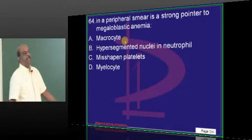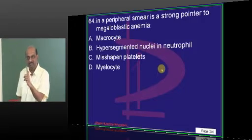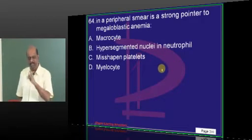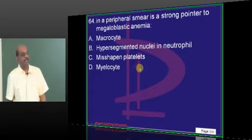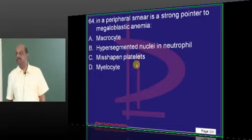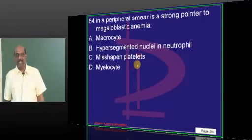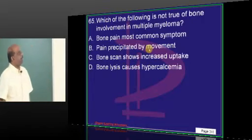What is a strong pointer to megaloblastic anemia? When you look through microscope, even if one cell has hypersegmented nuclei in the neutrophil, megaloblastic anemia is the diagnosis. So important is the finding and discovery of hypersegmented nuclei in the neutrophil.